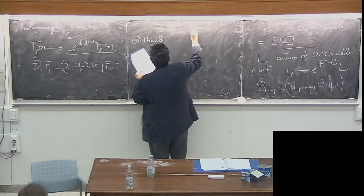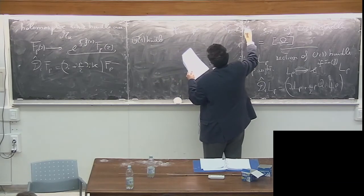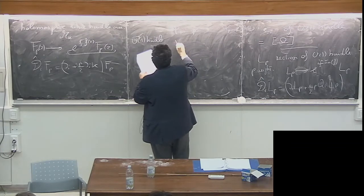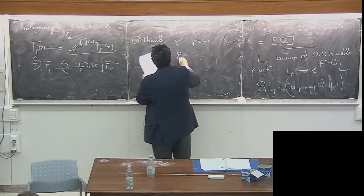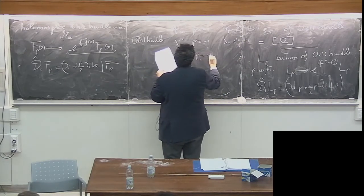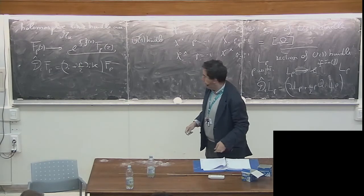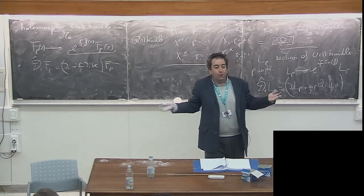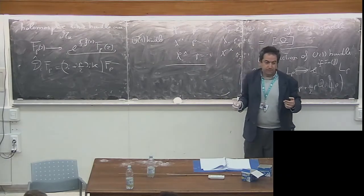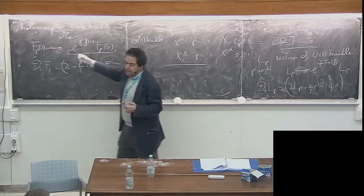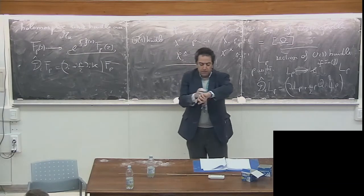Regarding the U(1) bundle weights: psi_mu lower bullet has weight P = minus 1; psi_mu upper bullet has P = plus 1; lambda upper bullet has P = minus 1; lambda lower bullet has P = plus 1; chi lower bullet has P = minus 1; chi upper bullet has P = plus 1. All fermions and chiral fermions have different weights under the U(1) bundle. What are sections of the line bundle in our theory? That is the very last thing.